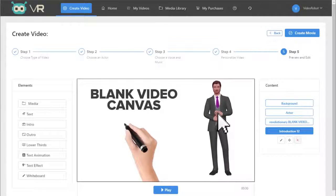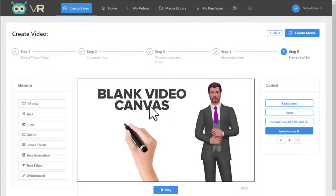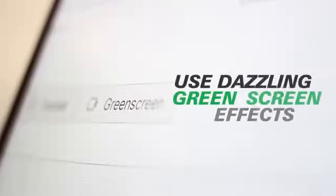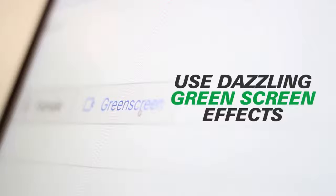You'll be able to produce amazing explainer kinetic motion and whiteboard animation videos. Use dazzling green screen effects to transform yourself or any spokesperson onto any background you choose and pull from a massive library of cutting-edge animations, text effects, intros, and calls to action to create studio quality videos that leave your competition in the dust.